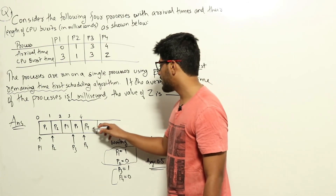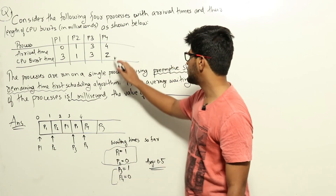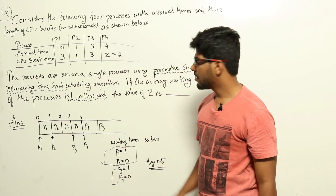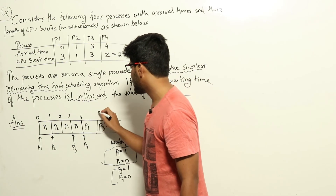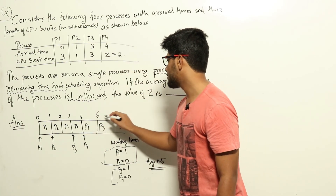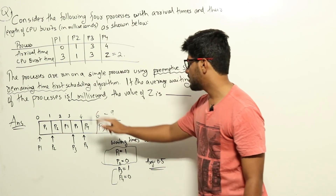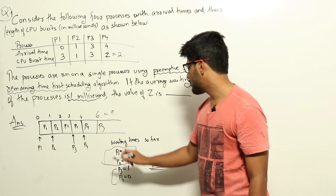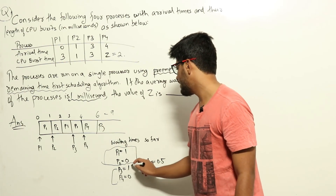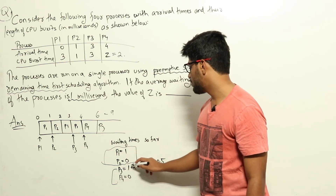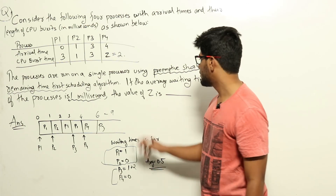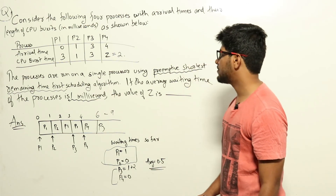We need to add exactly 2 milliseconds of additional waiting time, so P4 should run for exactly 2 milliseconds, meaning Z equals 2. P4 runs from time 4 to 6, and then P3 runs from 6 to 9. P4's waiting time is 0, and P3's total waiting time becomes 1 + 2 = 3 milliseconds. Total wait is 1 + 0 + 3 + 0 = 4, and 4/4 = 1 millisecond average, which matches the given condition. Therefore Z equals 2.